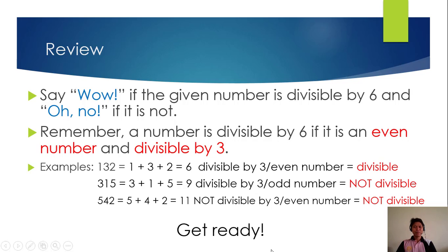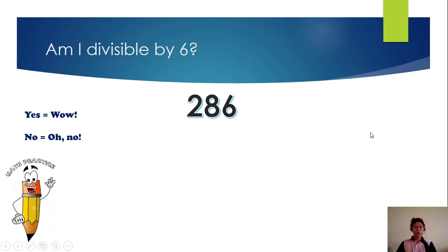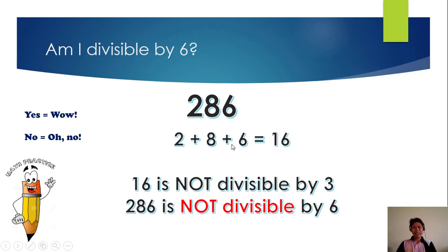Are you ready? Let's start. So 2 plus 8 plus 6 is 16. 2 plus 8 is 10, plus 6 is 16. It is not divisible by 3. By the way, if you do not memorize the multiples of 3, you can continue with 1 plus 6, which is 7, and it is not divisible by 3. So it is not divisible by 6. Our answer should be 'oh no.'